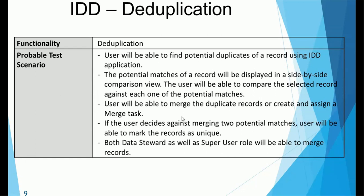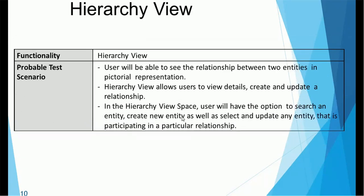Another functionality to check in IDD is duplicate detection. Users will be able to find potential duplicates, also called potential matches. These potential matches will be displayed in a side-by-side comparison view so users can compare actual values and see where records exactly match and where they are fuzzy matches. Users will be able to merge the duplicate records or create and assign merge tasks. If a user decides against merging two potential matches, they can mark the record as unique. Both data steward and super user have access to merge or unmerge records.